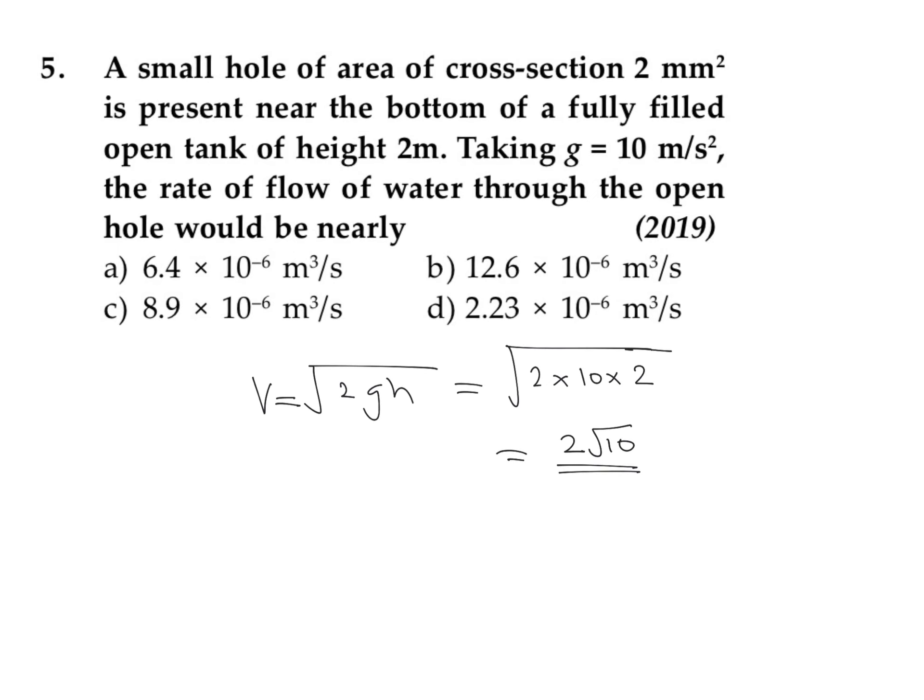Then, to find the volume flow rate, we know that volume flow rate dV/dt equals area times velocity. Area is given as 2 mm², so 2 × 10^-6 m², times the velocity, which is 2√10.